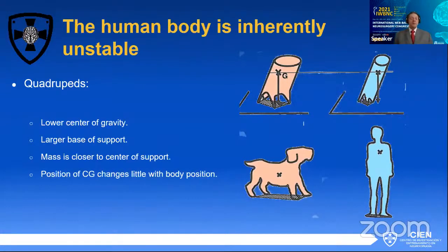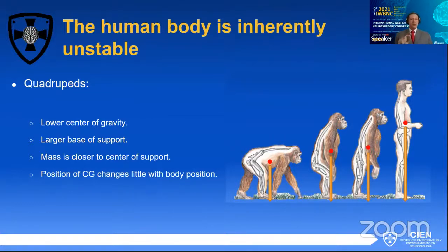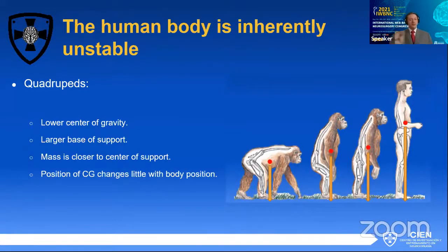Why is this important to us? The human body tends to be inherently unstable. As an evolutionary species, we started as quadrupeds with a large base of support and a low center of gravity. As we began to walk upright, the center of gravity went up and the base of support got shorter. This makes a very small base of support with a long distance from the center of gravity to that base, making it intolerant of shifts forward or backward — easily becoming completely unstable.